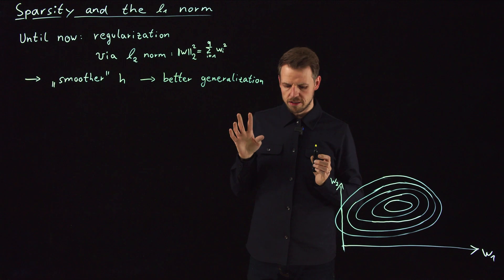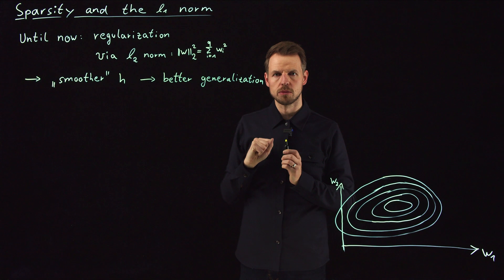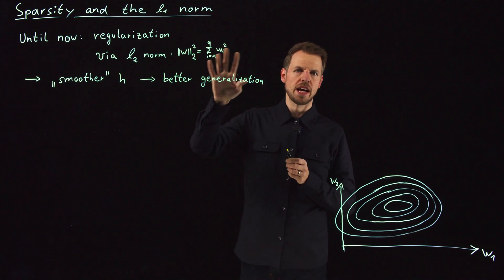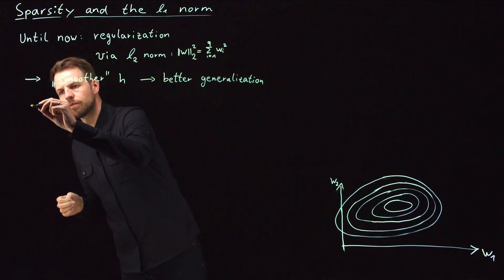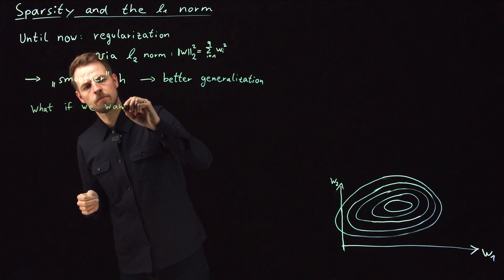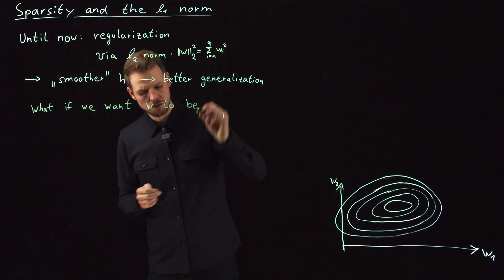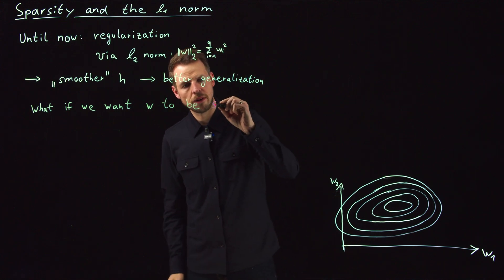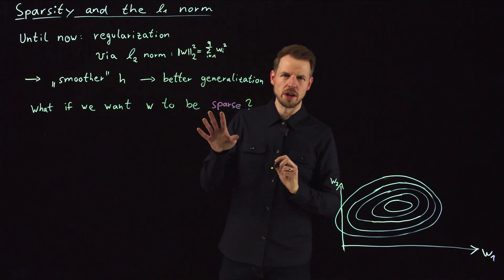But now let's ask the question, what if we want to have certain additional properties? So maybe we have a large number of weights and we want as few as possible of them to be active. So the question is now, what if we want W to be sparse?